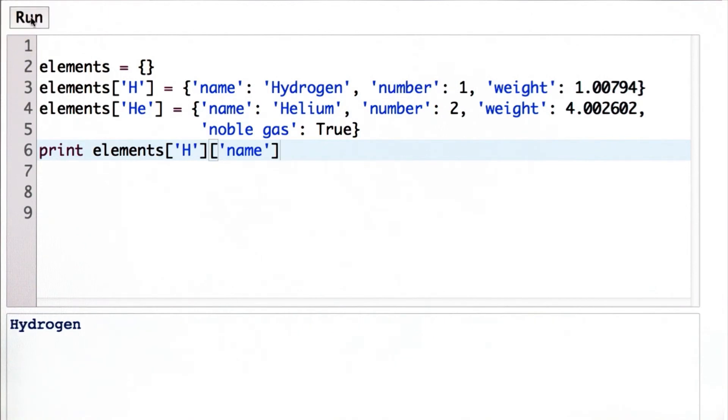and that will give us the name of the element whose symbol is h. We could change this to look up some other property. Let's look up the weight.